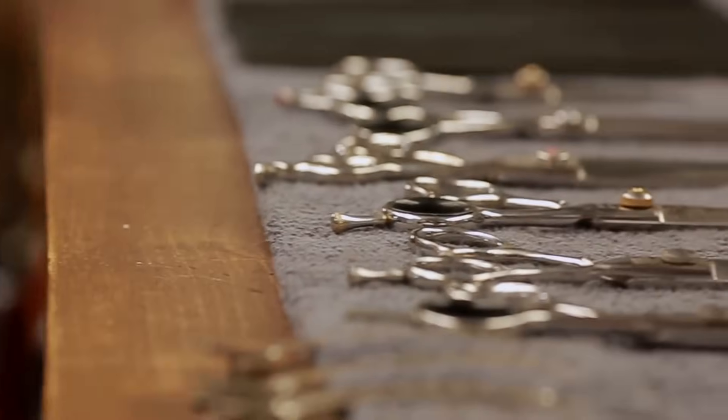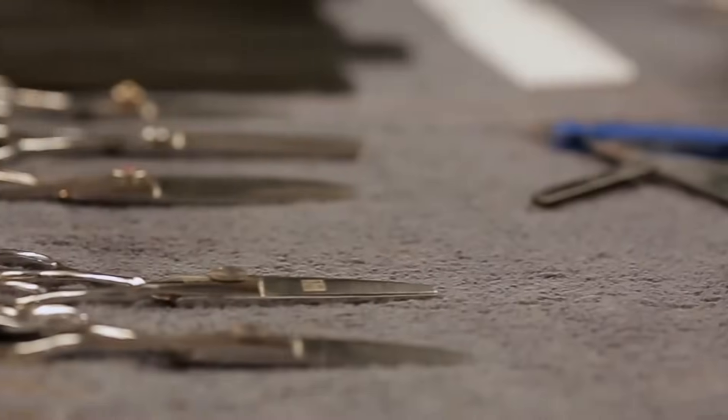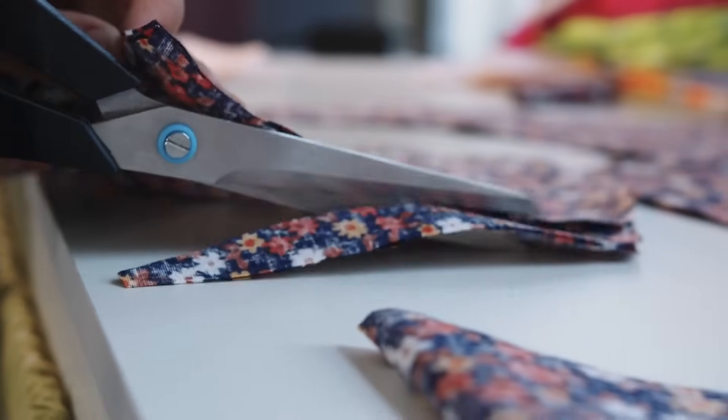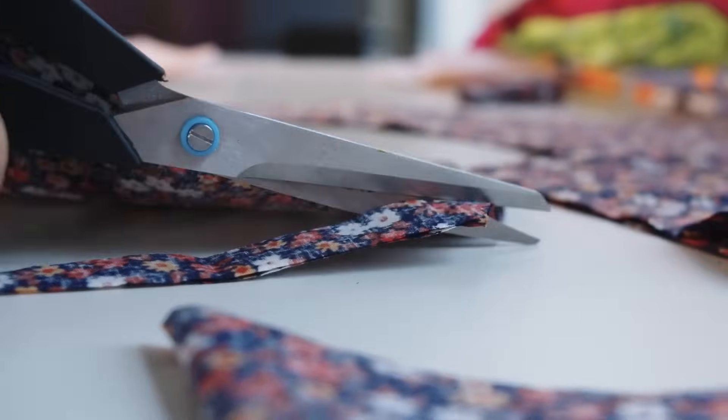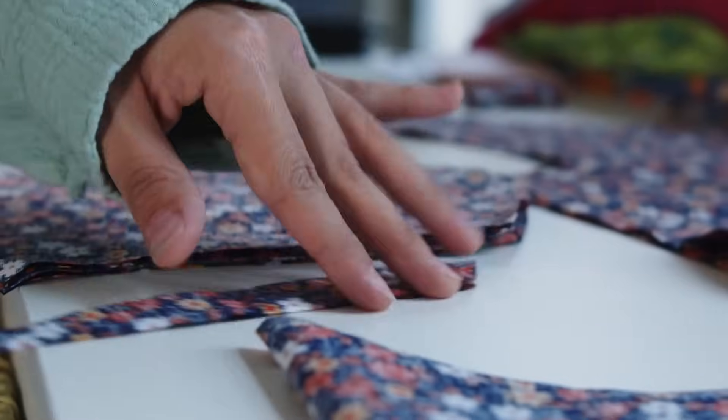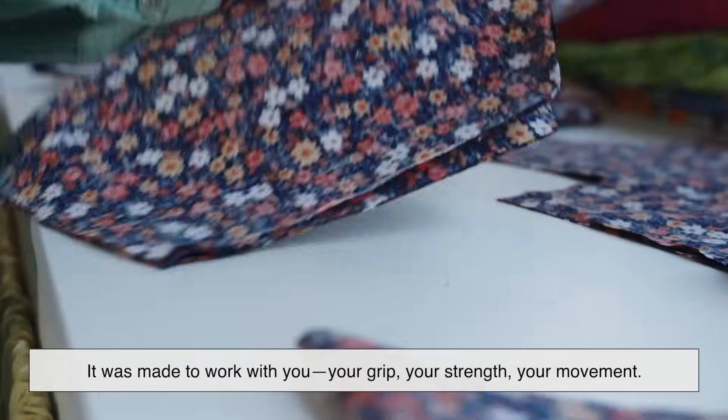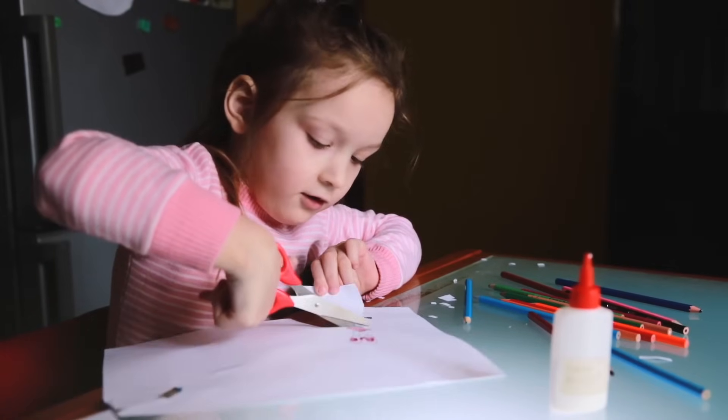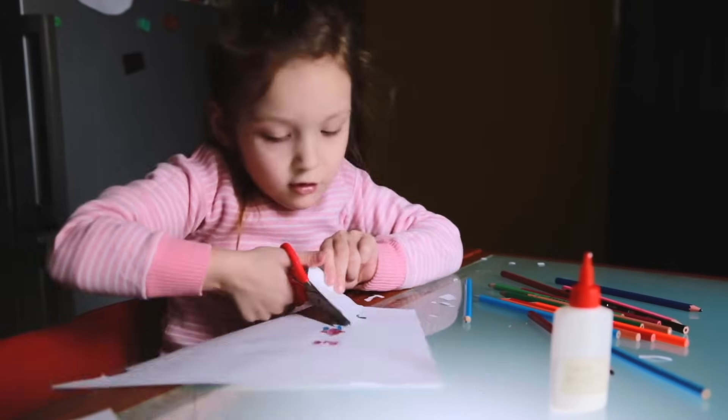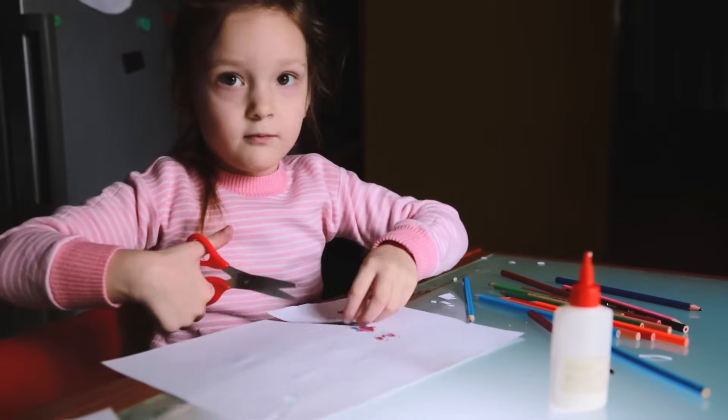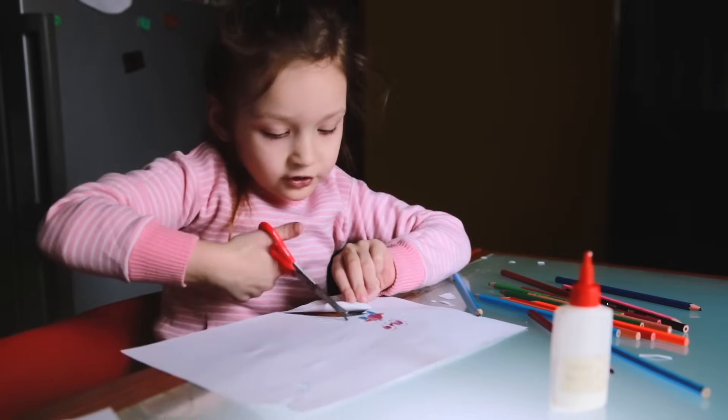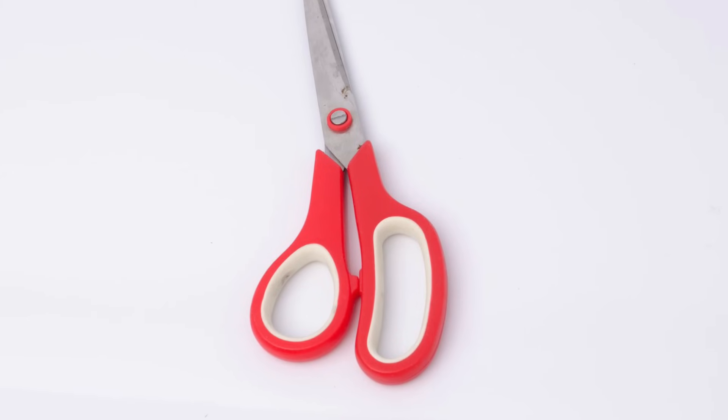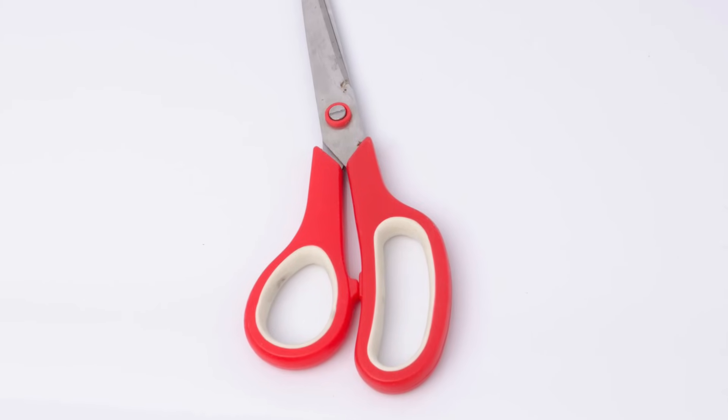So next time you grab a pair of scissors, pause for a second. Look at those handles. Not just as loops for your fingers, but as the result of centuries of fine-tuning. That larger loop wasn't made just to be different. It was made to work with you. Your grip, your strength, your movement. It's a quiet piece of design that turns something as simple as cutting paper into an intuitive act. You didn't need an instruction manual to know which fingers go where. The tool teaches you as you use it. And that's the mark of a well-thought-out invention.